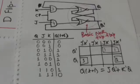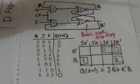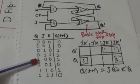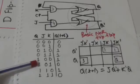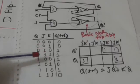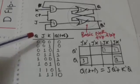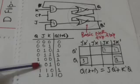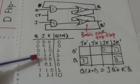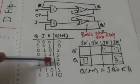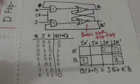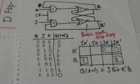Here CP denotes the clock pulse. On the occurrence of clock pulse, the flip-flop will switch to clear state when the present state Q is 1 and K equals 1. So on the occurrence of clock pulse, when Q equals 1 and K equals 1, the flip-flop will switch to clear state.